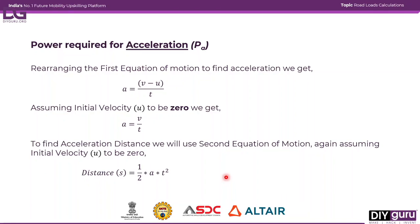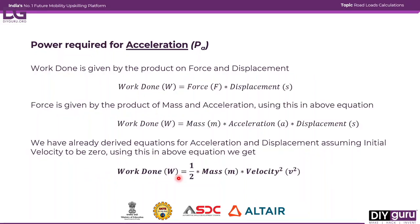Work done is force multiplied by displacement, and force is mass times acceleration. Substituting in our equations for acceleration and displacement — with initial velocity assumed to be zero — the whole equation for work done becomes ½ × mass × v².